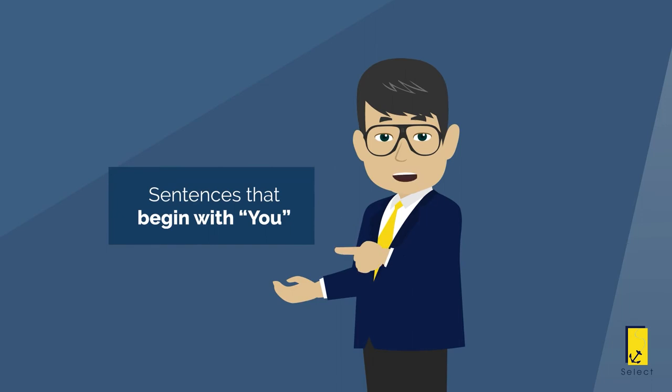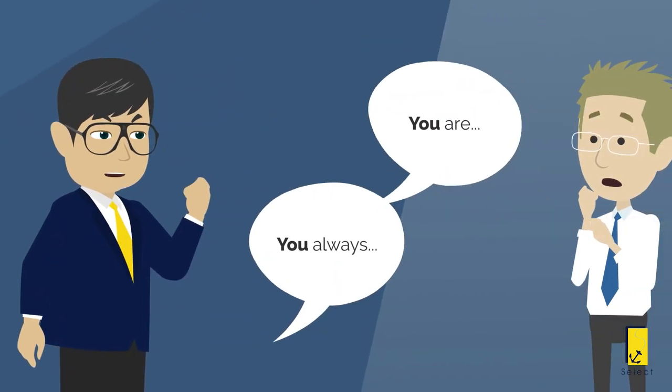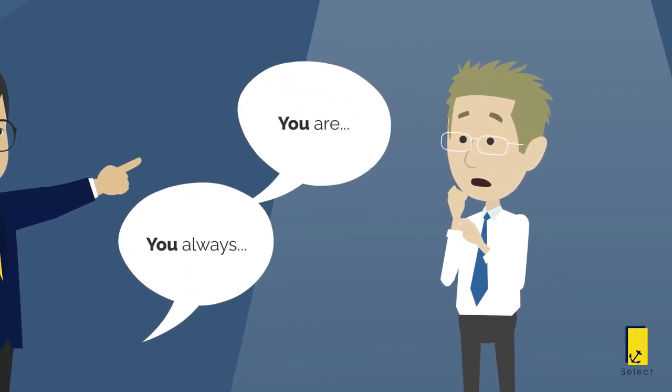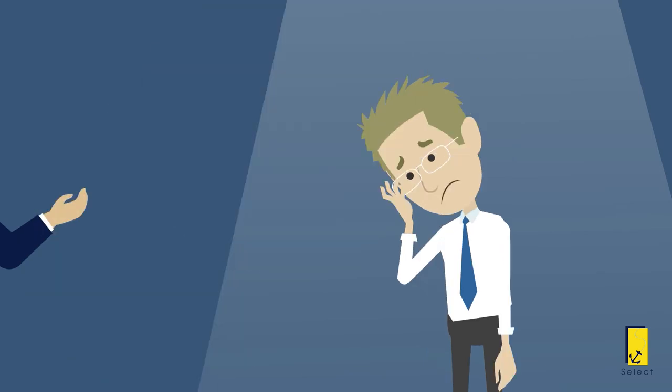Sentences that begin with you, such as you always or you are, make broad inaccurate generalizations about the other person and often lead to the other person feeling blamed and judged.